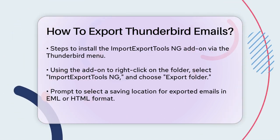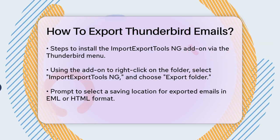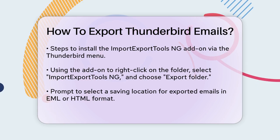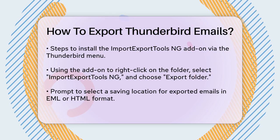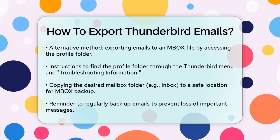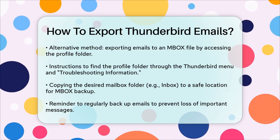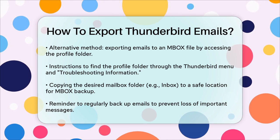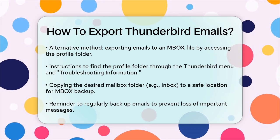Another option is to export your emails using the built-in Thunderbird feature to export to an MBOX file. To do this, close Thunderbird and navigate to your profile folder. The location of this folder varies depending on your operating system, but you can find it by going to the Thunderbird menu, selecting Help, then Troubleshooting Information, and looking for the profile folder path.